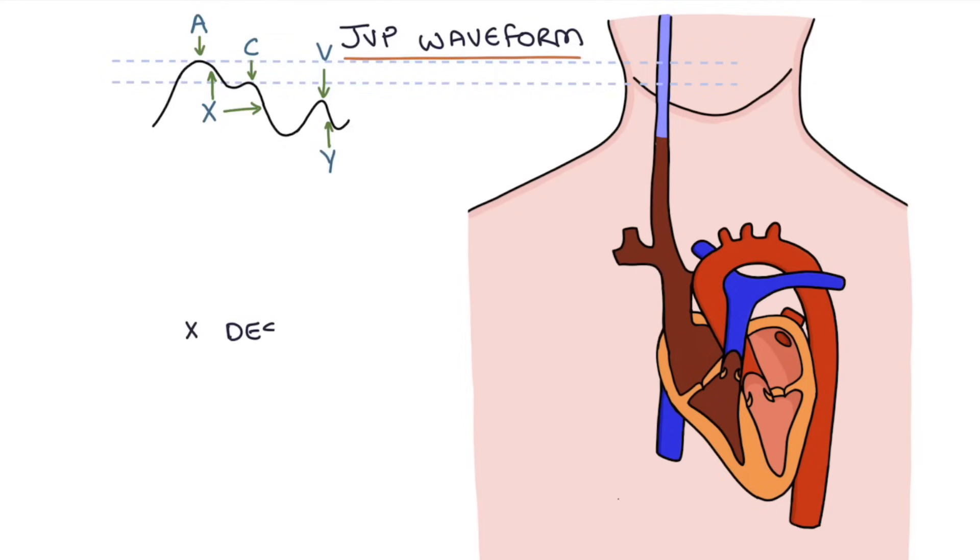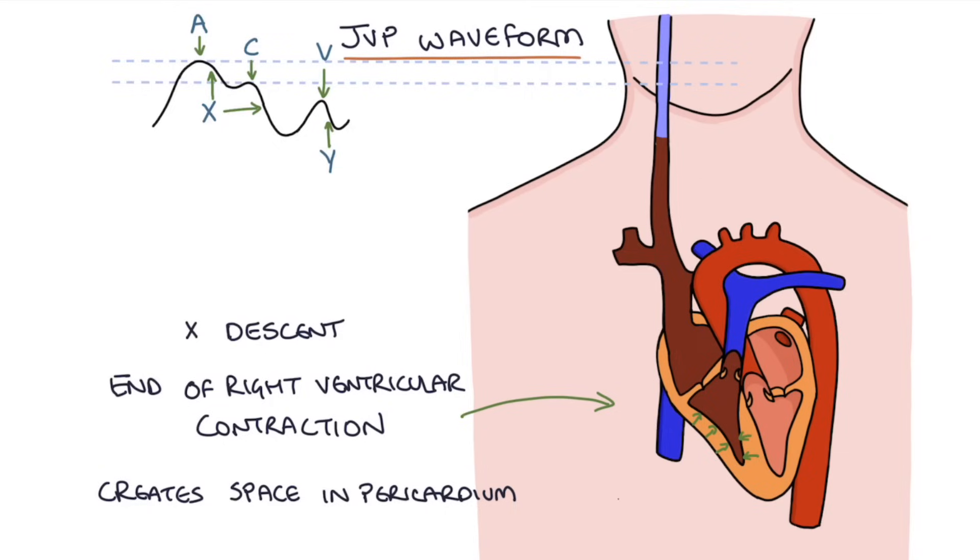The remainder of the X descent is caused by the final parts of the right ventricular contraction where it's squeezed so small that it creates space in the pericardium, or the sac that fills the heart, for the right atrium to fill. Basically, the ventricle becomes very small and creates more space inside that sac so that the atrium has space to fill out. This acts a bit like a vacuum. The ventricle shrinks and creates space inside the pericardium for the atria to fill, so they expand and suck in blood, which causes the JVP to fall.